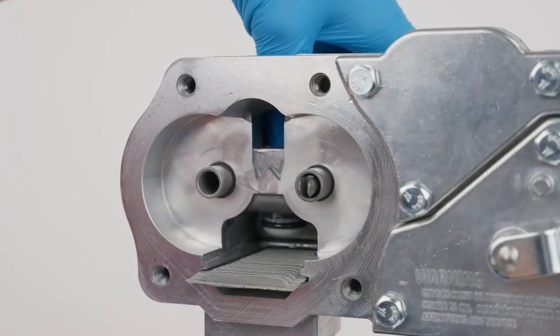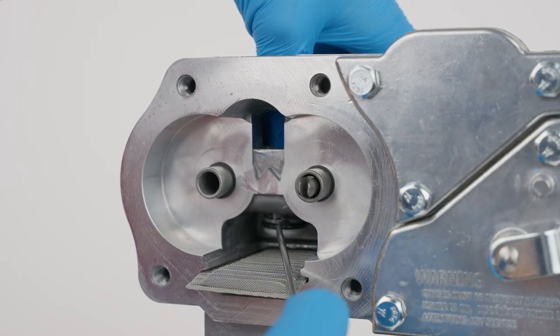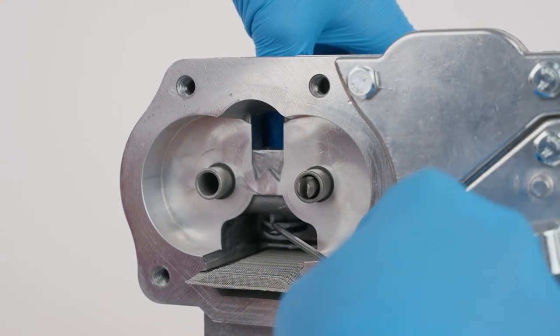To remove the poppet o-ring, push down on the poppet until the o-ring is exposed. Carefully remove the o-ring with a small screwdriver.